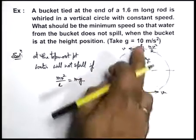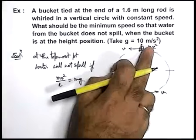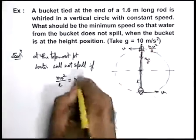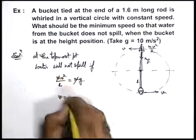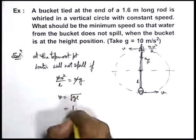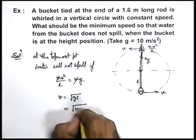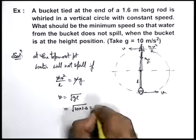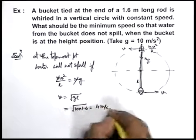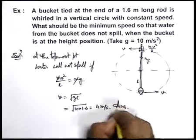It will not spill, it will spill only if mg is more than the centrifugal force. So in this situation we can see the speed will be equal to √(gl). That is equal to √(10 × 1.6), that is √16, which is 4 meters per second. So that is the answer to this problem.